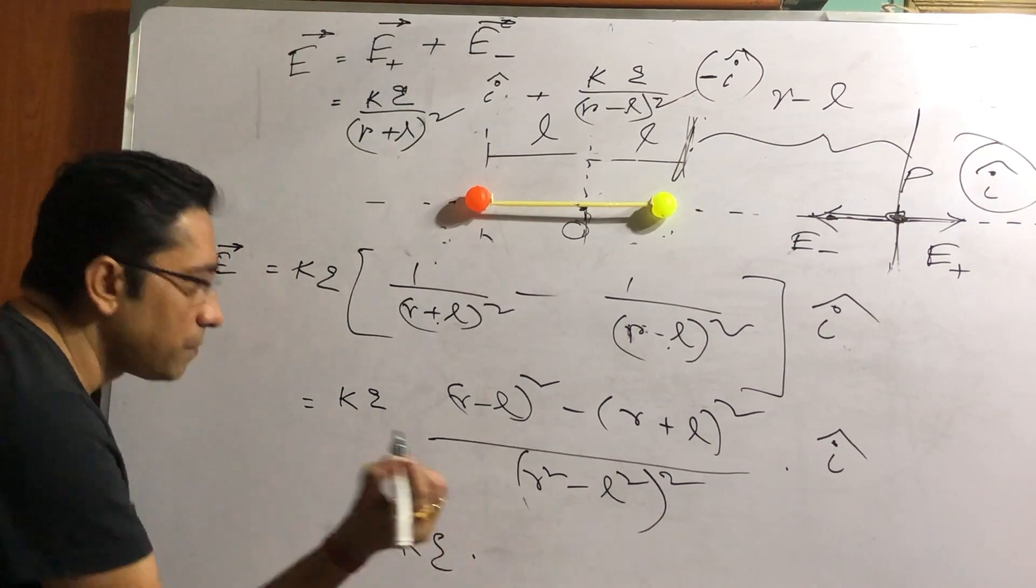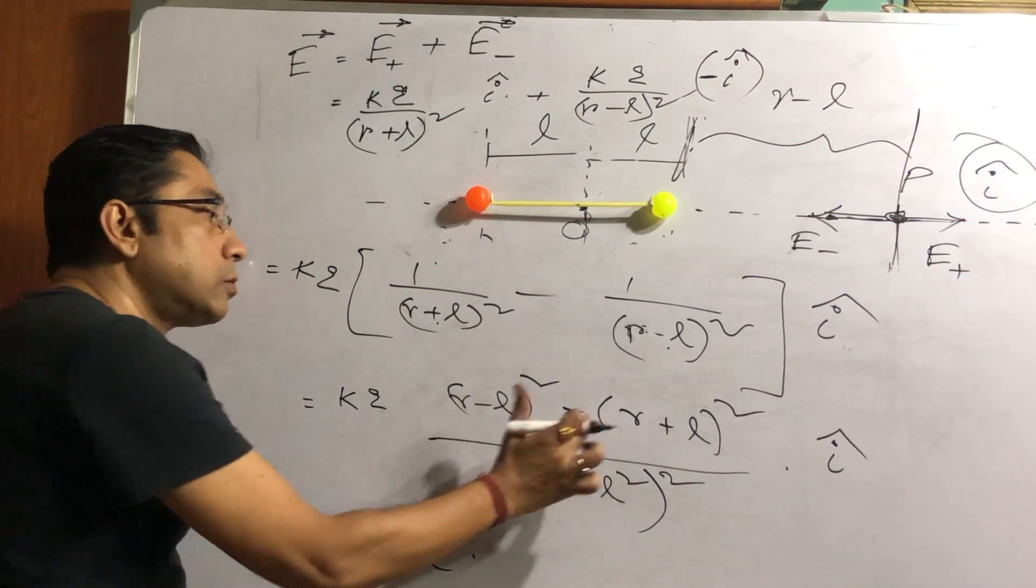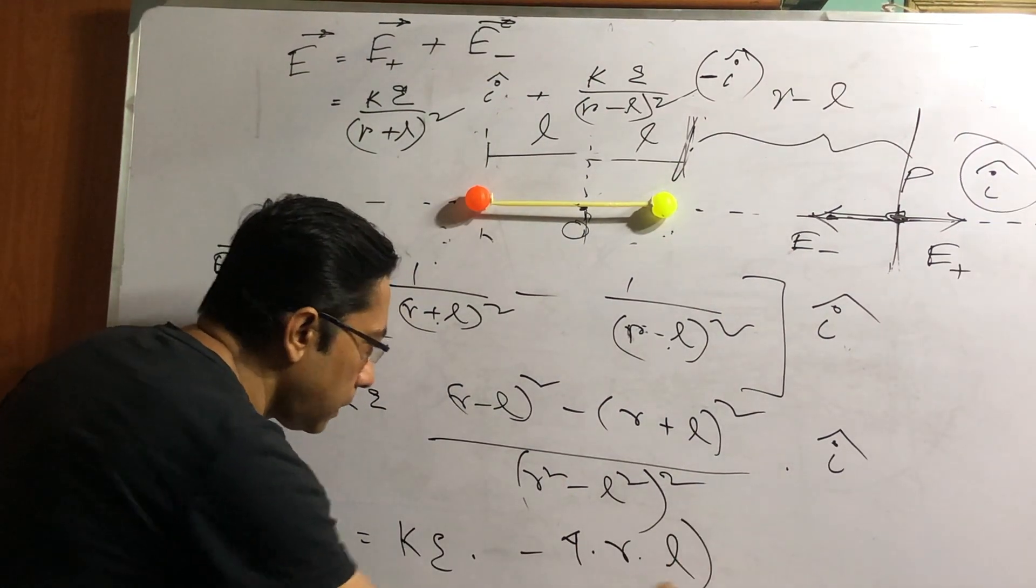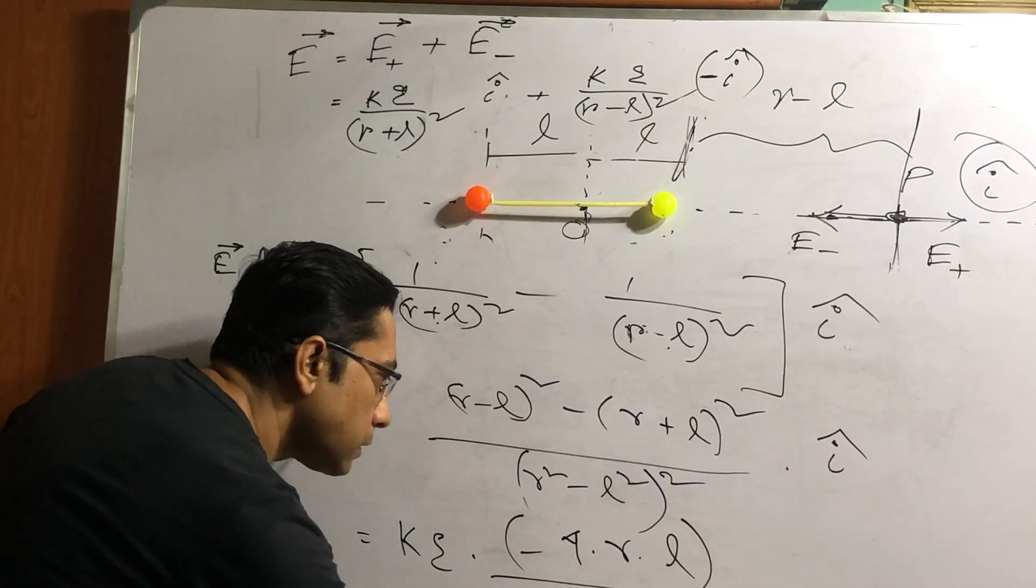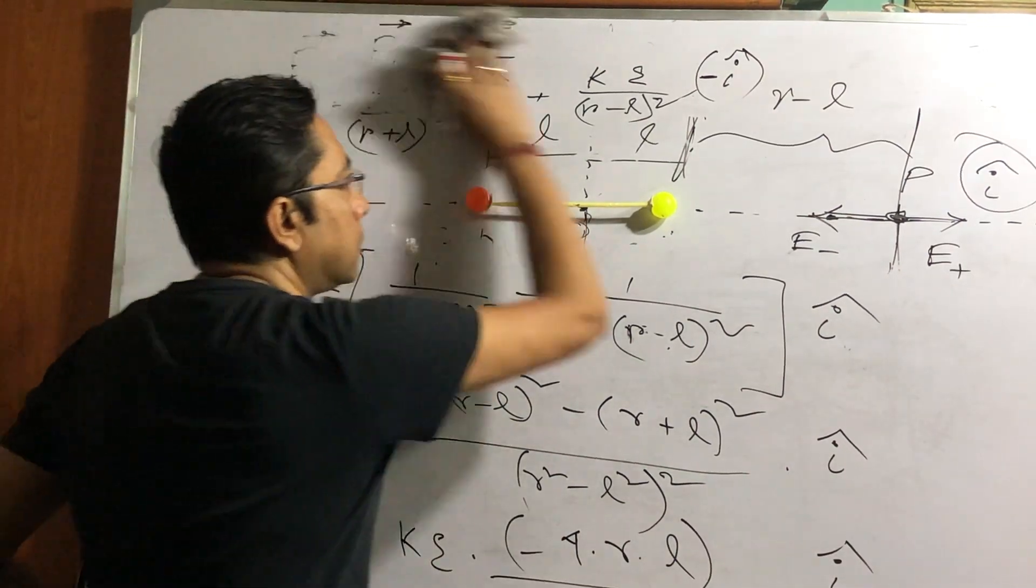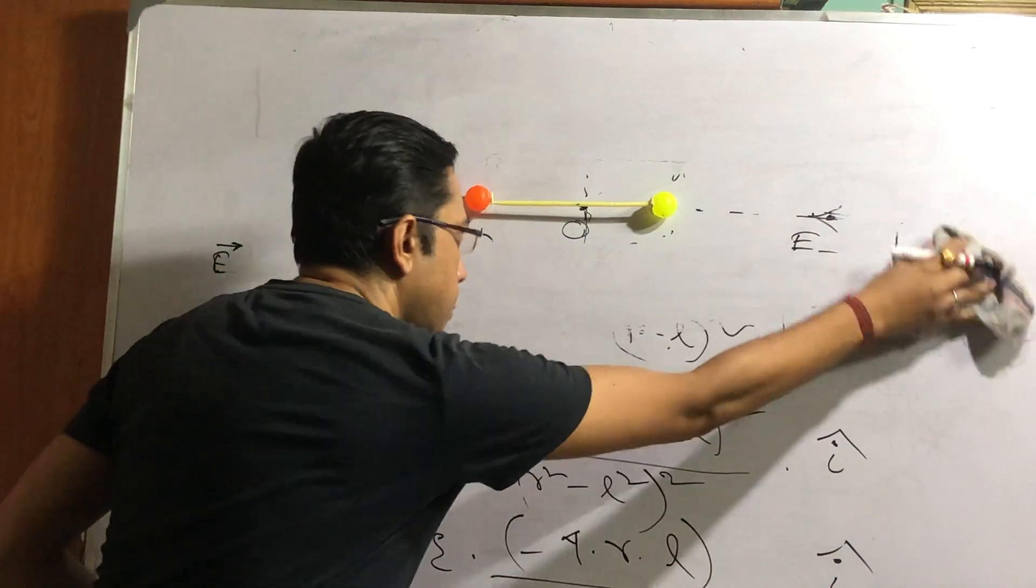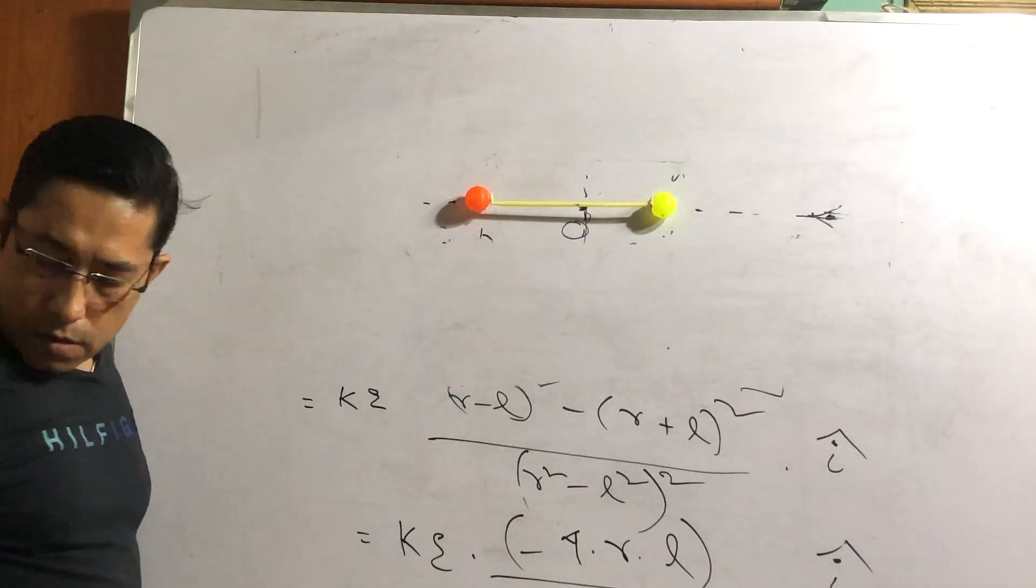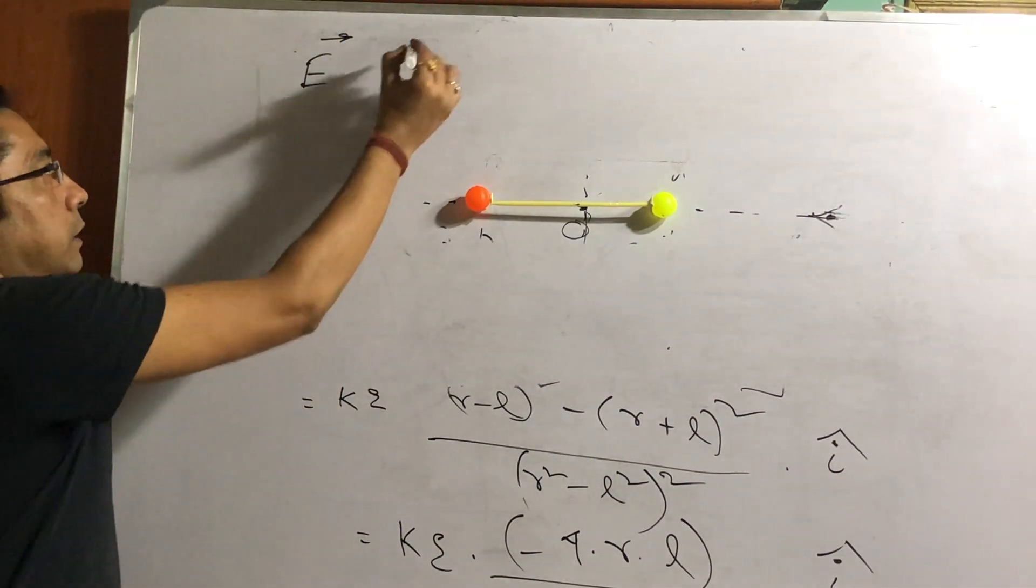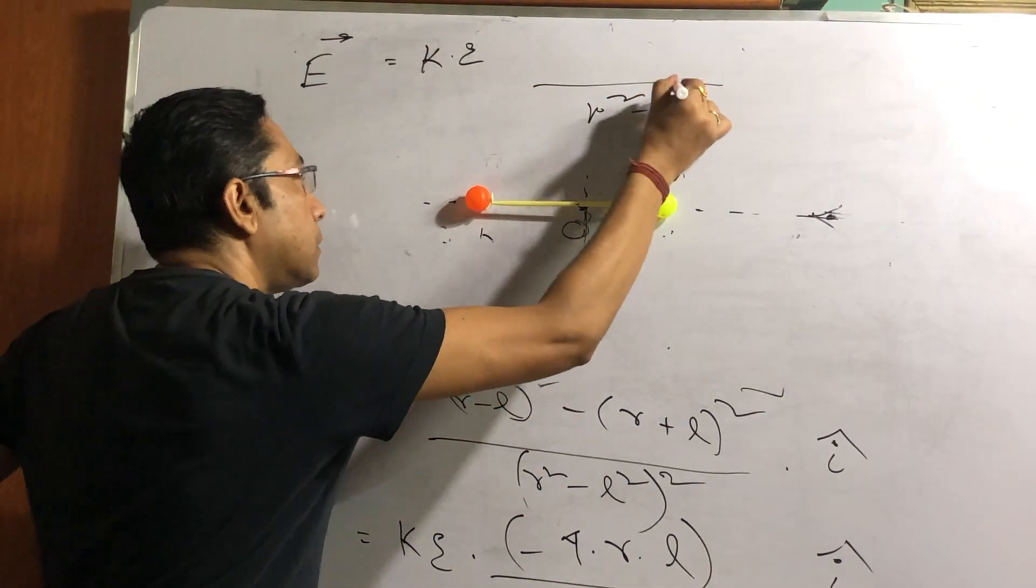Anyway. So K, Q. A plus B whole square minus A minus B whole square: 4AB. But A minus B whole square minus A plus B whole square: minus 4AB. So minus 4, A means R, B means L, divide by (R square minus L square) then whole square, i hat. I am taking this over here. Clean up operation. So let us take this. Electric field E in vector form: K Q, (R square minus L square) whole square.